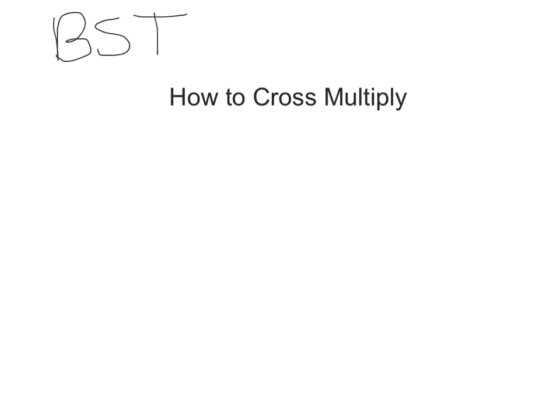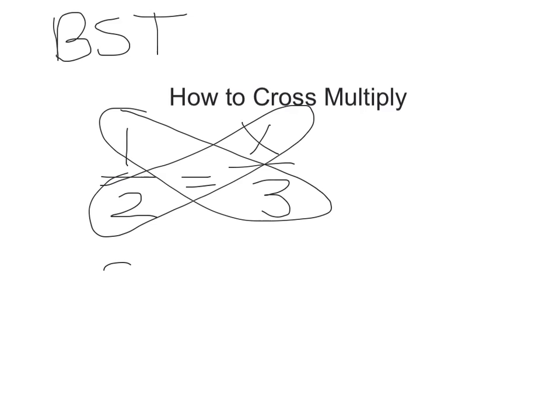First, you have your two fractions. You would then multiply across, and that would give you 3 equals 2x.